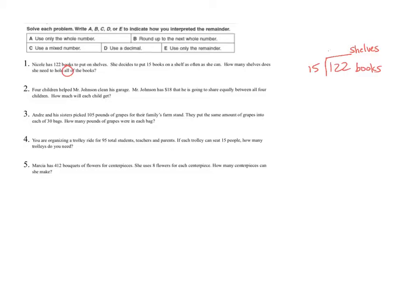I'm going to go ahead and start my division. 15 does not go into 1 or into 12, but it does go into 122. If you aren't sure, you can make a list of 15s and count by 15s until you get to approximately 122, or you can do some side multiplication using your estimation skills to figure out how many times approximately 15 goes into 122. In my list, I never have to go past 9 because I can never put a number larger than 9 in any one place value. If I go up to 9, that would be using 135 books, and I don't have 135 books. So I'll say it goes in 8 times, which is using 120 books.